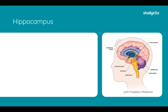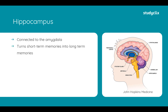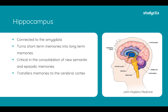Moving on to the hippocampus — looking at the diagram, we can see it here, connected to the amygdala. The hippocampus turns short-term memories into long-term memories, increasing their duration and capacity. Short-term memory holds only five to nine things for 18 to 20 seconds, compared to potentially unlimited for long-term. It plays a critical role in the consolidation of new semantic and episodic memories, creating strong neural pathways for explicit memory, and transfers these memories to the cerebral cortex for storage.